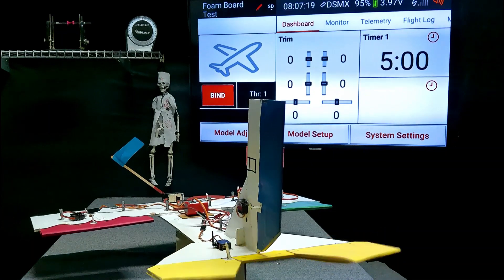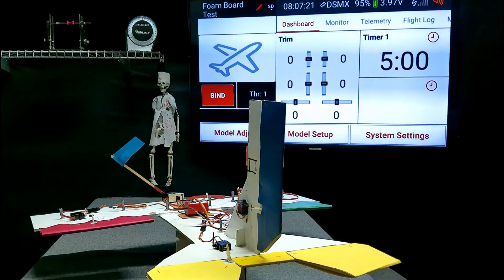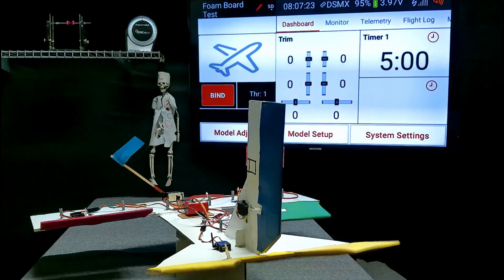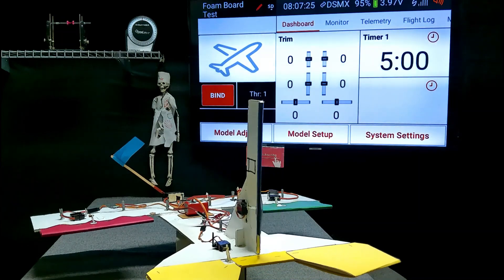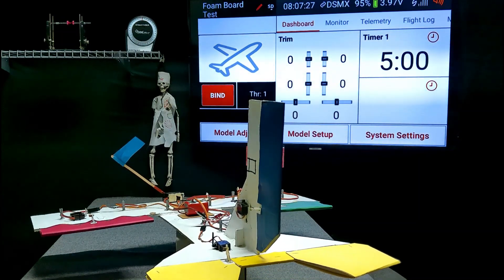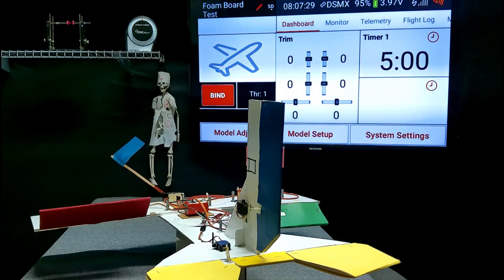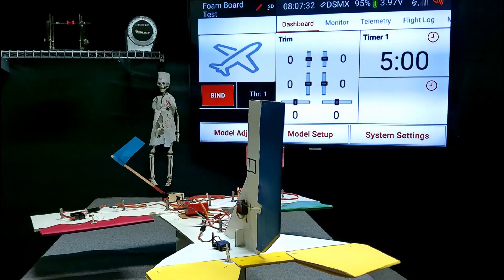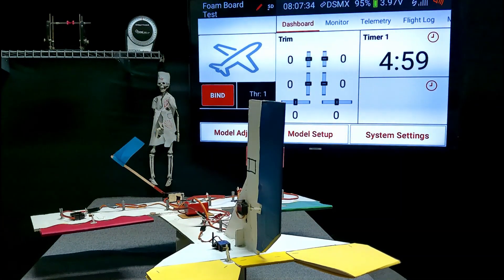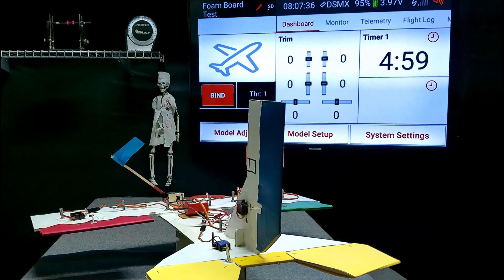So right now let's just go through our control surface check, just making sure everything is set up, everything is good to go. Elevator up, elevator down, rudder left, rudder right, right aileron up, left aileron up, throttle, the little blue flag, full throttle, no throttle, throttle cut on.